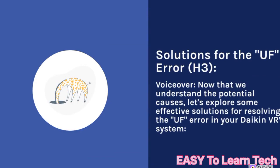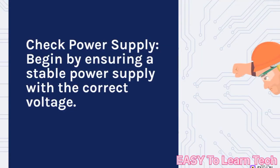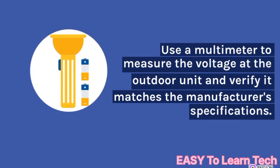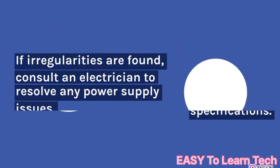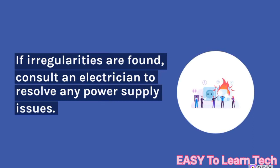Now that we understand the potential causes, let's explore some effective solutions for resolving the UF error in your Daikin VRV system. Check power supply: begin by ensuring a stable power supply with the correct voltage. Use a multimeter to measure the voltage at the outdoor unit and verify it matches the manufacturer's specifications. If irregularities are found, consult an electrician to resolve any power supply issues.